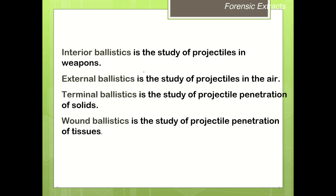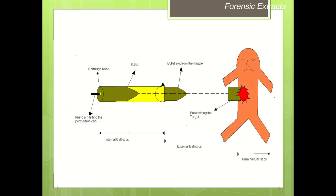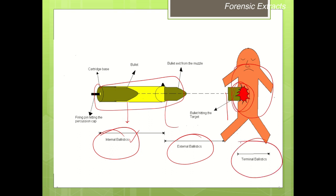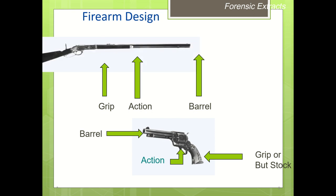Interior ballistics is the study of the projectile inside the weapon barrel. Exterior ballistics is the study of the projectile in the air. Terminal ballistics is the study of projectile penetration of a solid. Wound ballistics is the study of projectile penetration of tissues. Whatever happens inside the barrel is interior ballistics; whatever happens in the air before striking the target is exterior ballistics; and whatever happens after striking the body is terminal or wound ballistics.